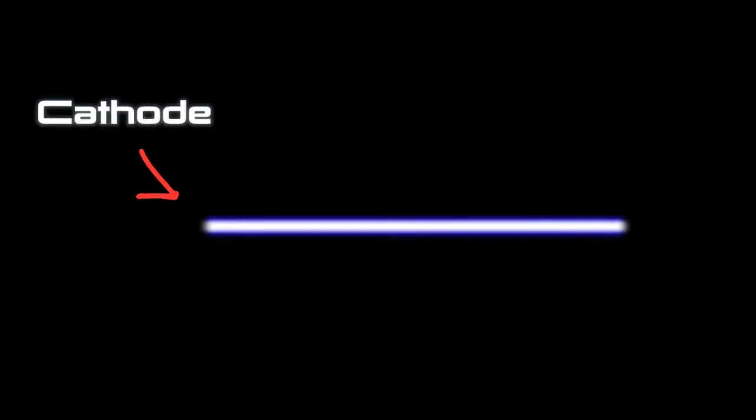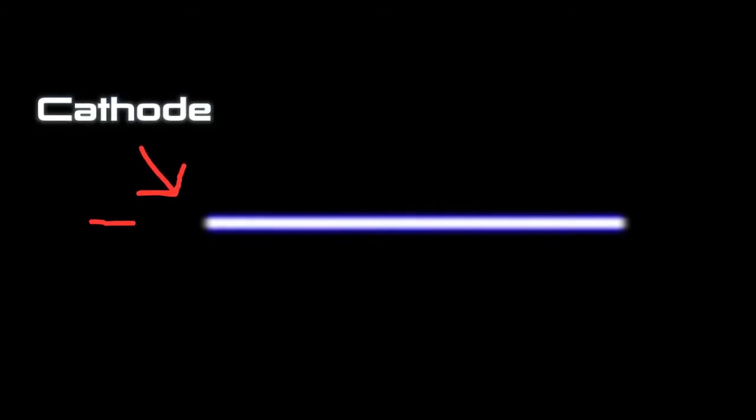Here is a neon light. On the left side we have a cathode which is negatively charged. On the right side we have an anode. Its charge is positive.